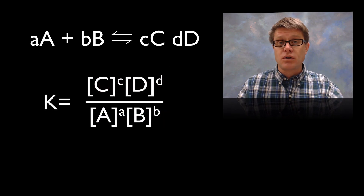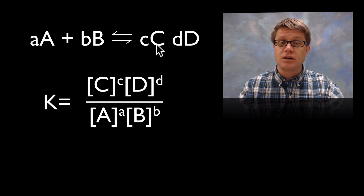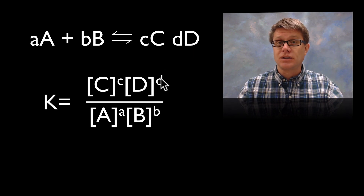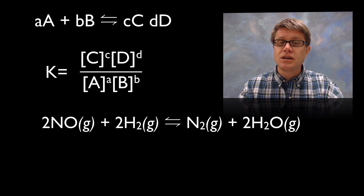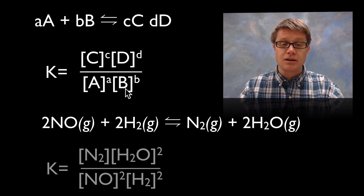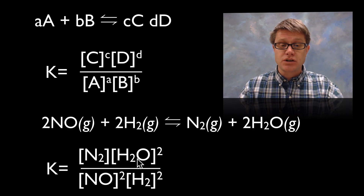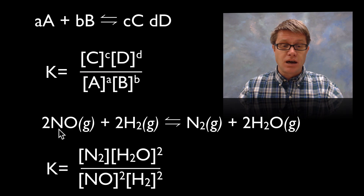The general form for calculating K is: for a reaction aA + bB ⇌ cC + dD, K equals the concentration of C raised to the power c times the concentration of D raised to the power d, divided by the concentration of A raised to the power a times the concentration of B raised to the power b. For example, writing the equilibrium expression for a given equation: products go on top — concentration of N₂ times concentration of H₂O raised to the second power (because the mole coefficient is 2) — and reactants go on the bottom — concentration of NO raised to the 2nd power times concentration of H₂ raised to the 2nd power.